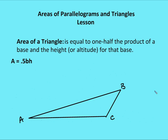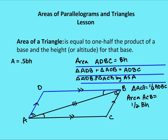So how do we figure out that the area of a triangle is one-half the base times the height? What I'm going to do is create a parallelogram by drawing A to D, such that AD and CB are congruent and parallel, and then draw D to B. So I have parallelogram ADBC. The area of the parallelogram, as we've defined, is base times height. I'm going to prove that the two triangles I've created are congruent: triangle ACB is going to be congruent to triangle ADB.